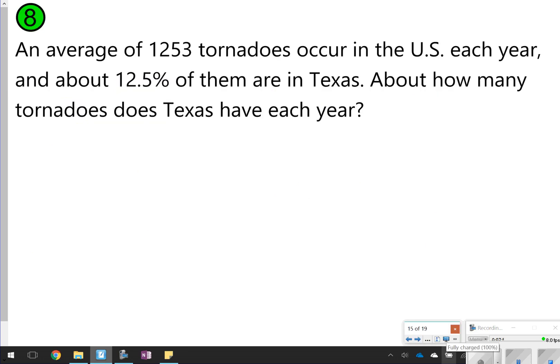The last one is a word problem. Again, you're going to pause it, write your proportion, and then solve, and then click play to check. It says an average of 1,253 tornadoes occur in the United States each year, and about 12.5% of them are in Texas. About how many tornadoes does Texas have each year?